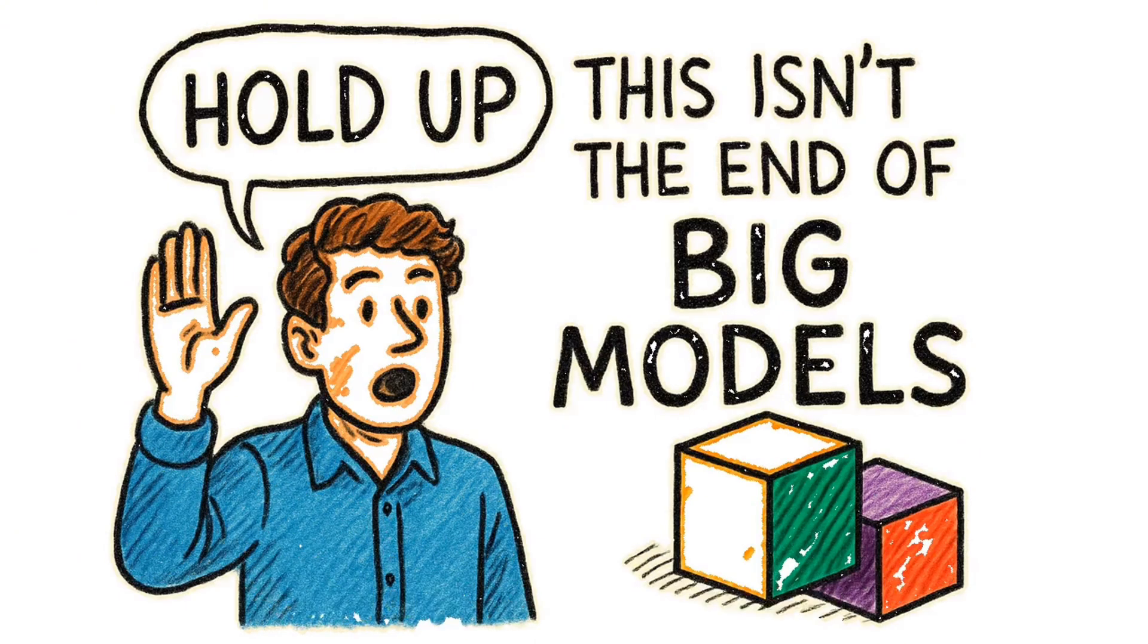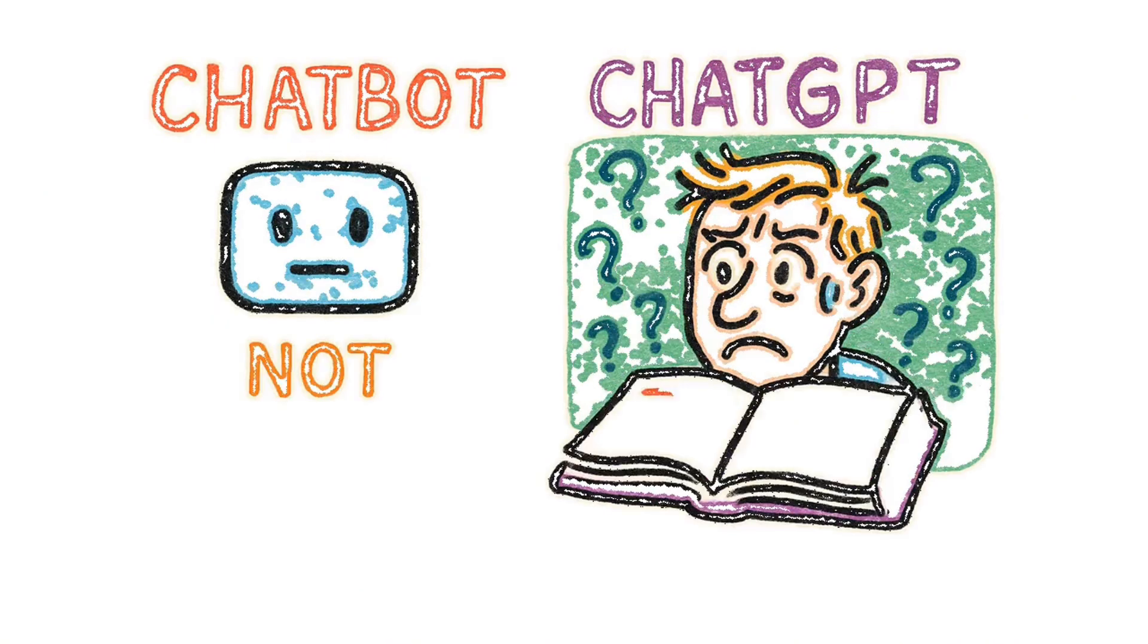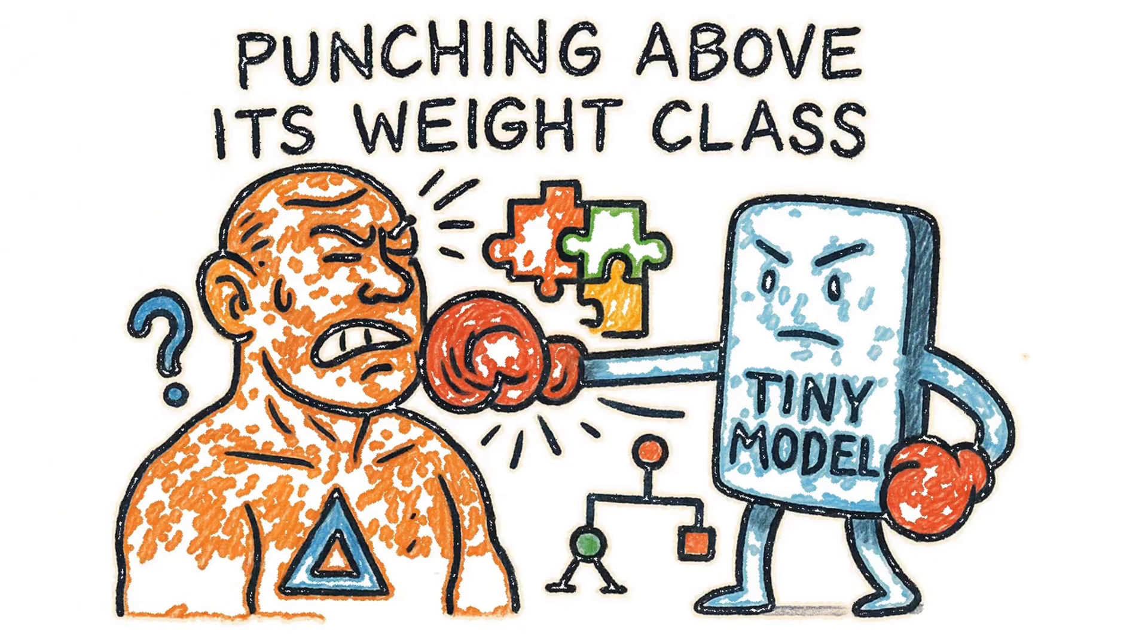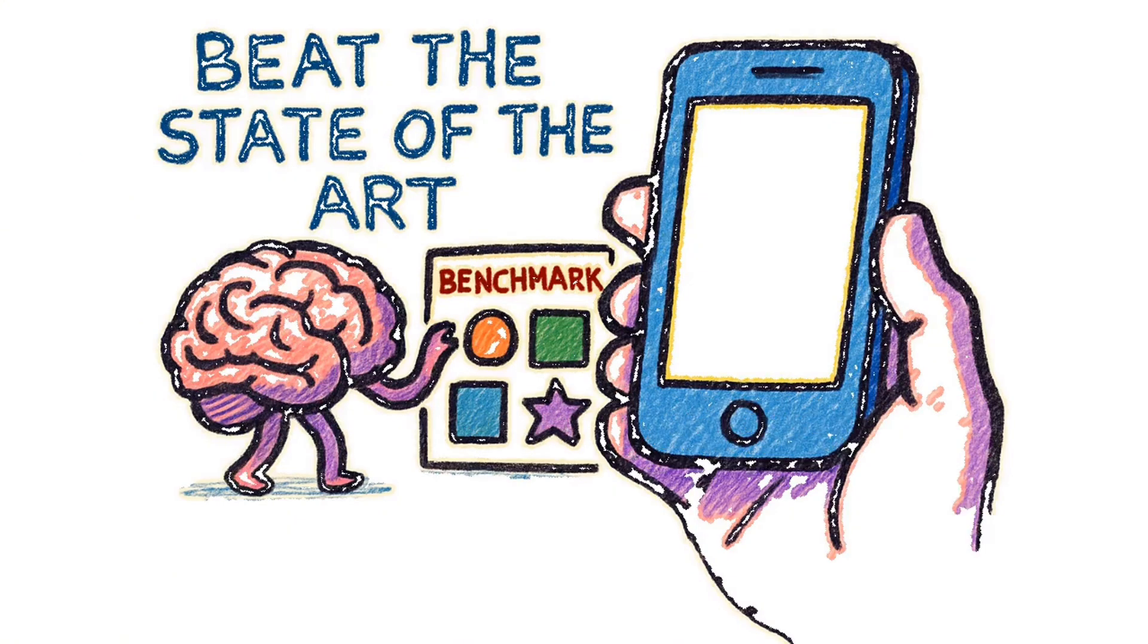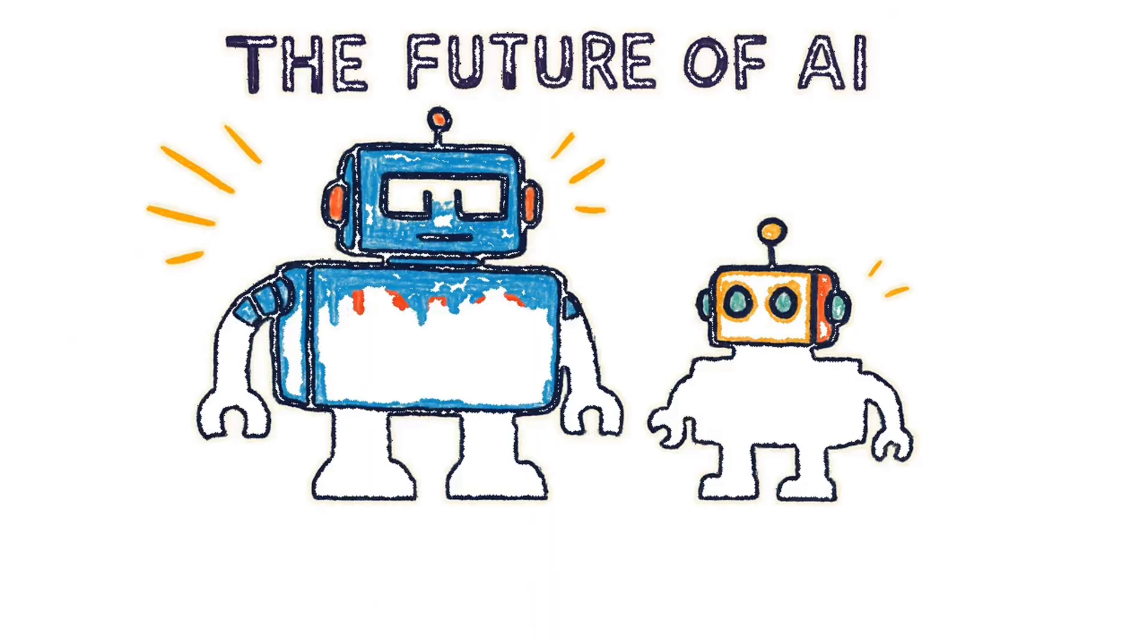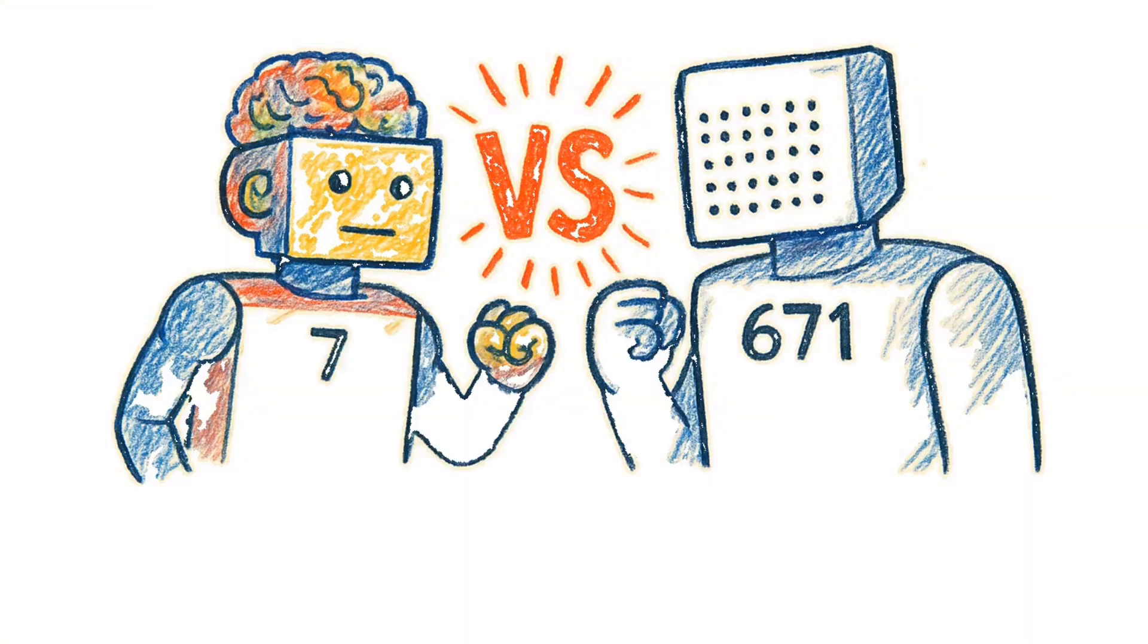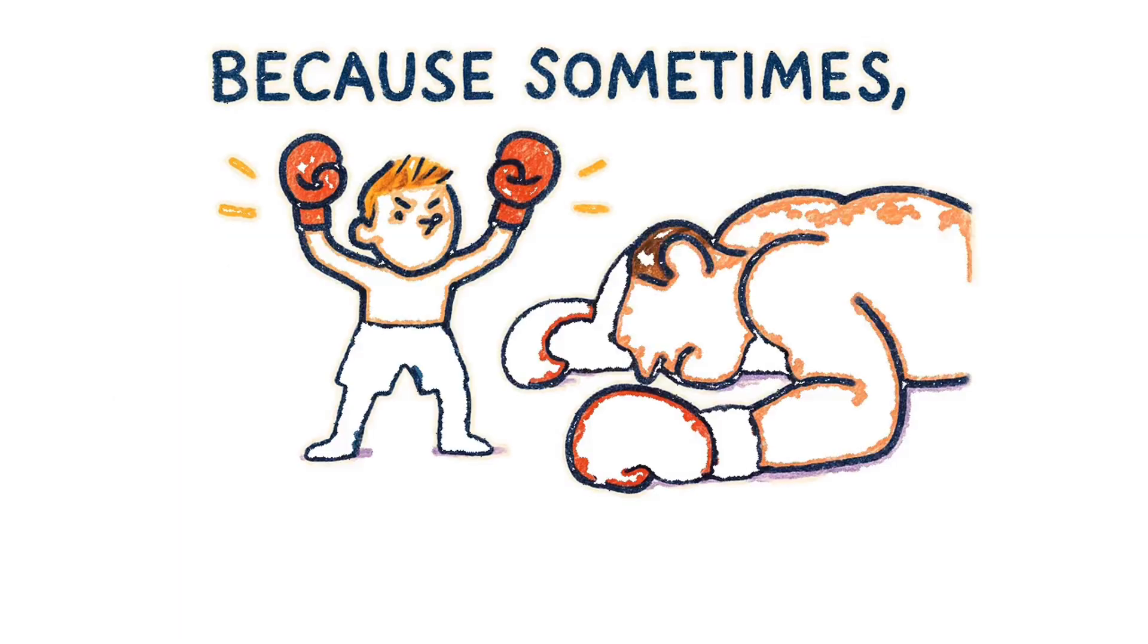Now, hold up. This isn't the end of big models. TRM is trained on specific tasks. It's not a general chatbot like ChatGPT and struggles with tasks needing a massive knowledge base. But for hard reasoning, puzzles, logic, abstract thinking, this tiny model is punching way above its weight class. It beat the state of the art on a benchmark designed to test human-like reasoning with a model that fits in your pocket. The takeaway is this. The future of AI might not be about building bigger models, but smarter ones. And if a 7 million parameter model can embarrass a 671 billion parameter model, maybe it's time for Silicon Valley to rethink the whole go big or go home strategy. Because sometimes the little guy wins.